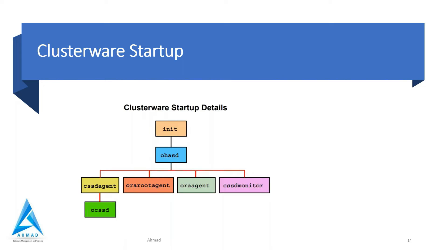The fourth process is cssd monitor, and it is responsible for monitoring the ocssd daemon. These are the four processes which start at the first level. You can remember: init, then OHASD, then cssd agent, ora root agent, ora agent, and cssd monitor - that is the way you can learn this.